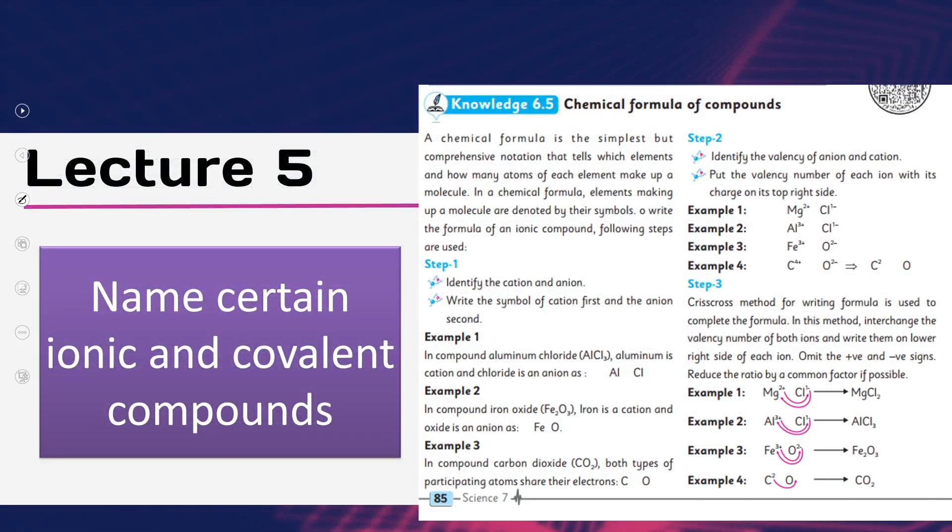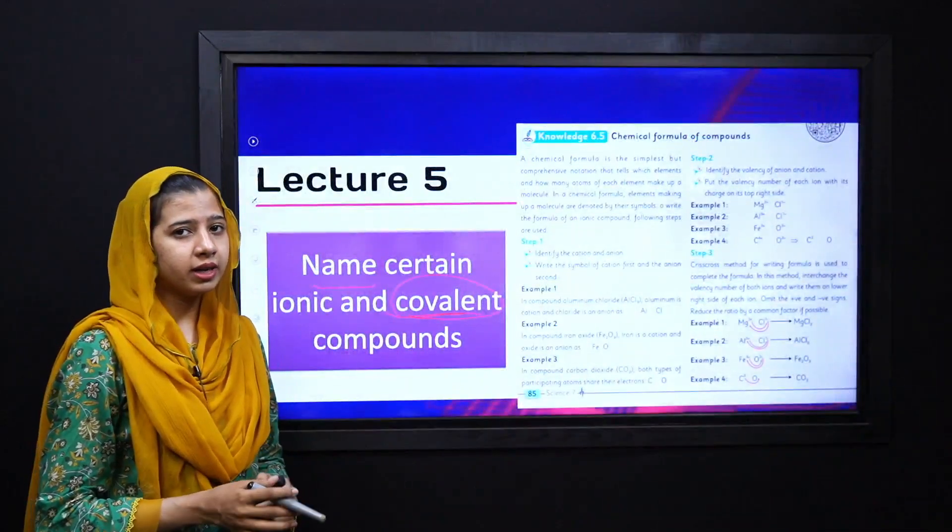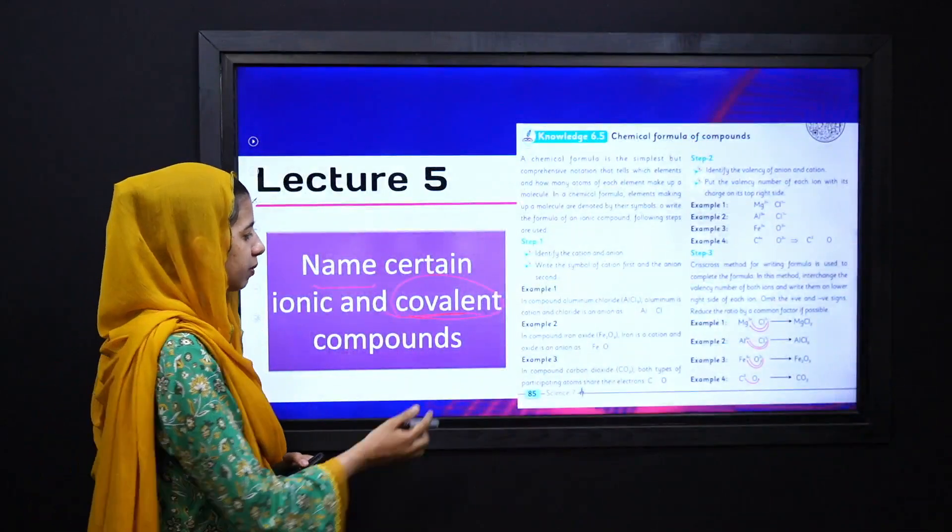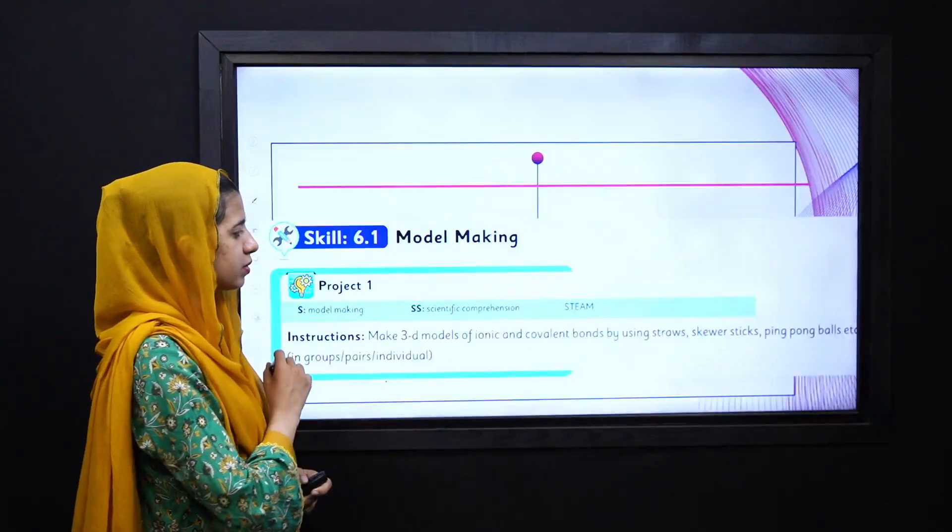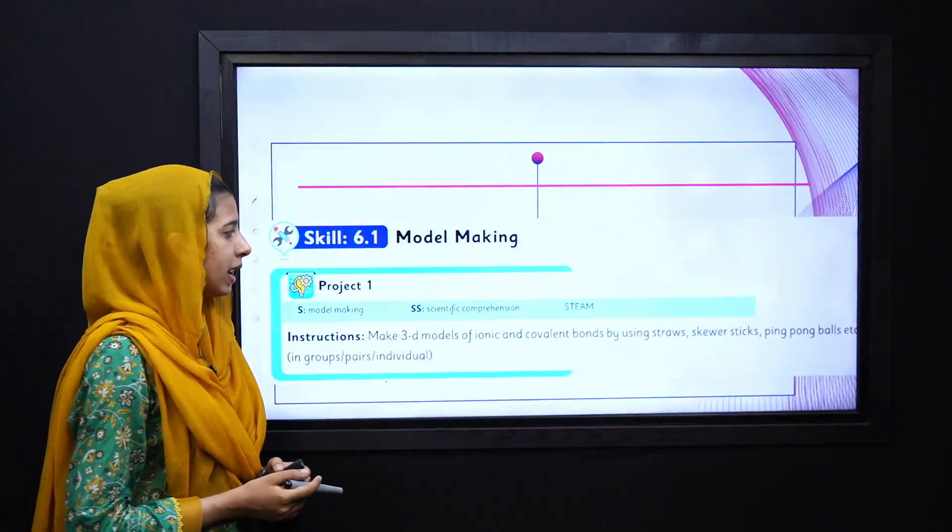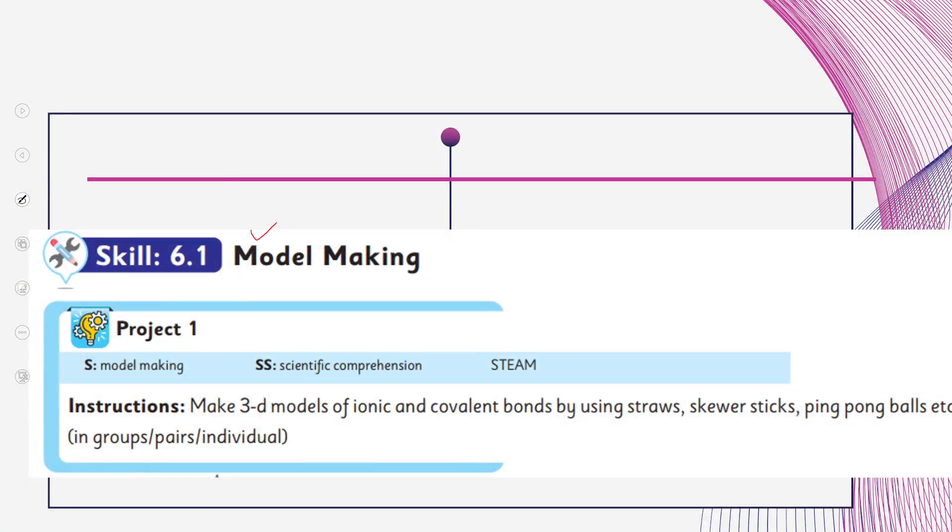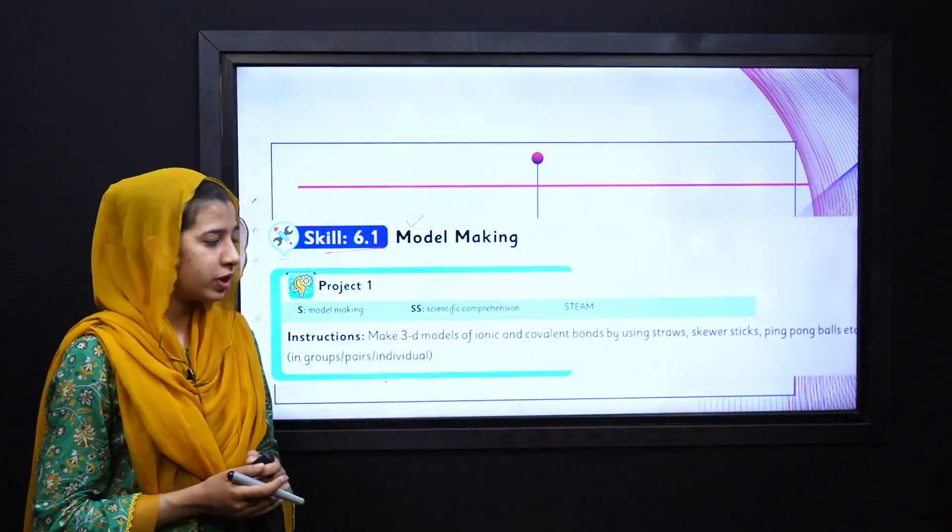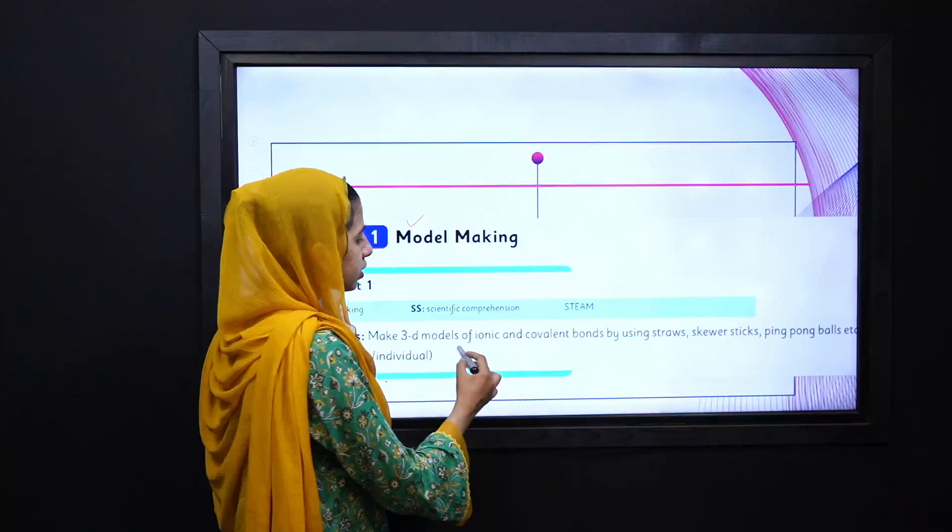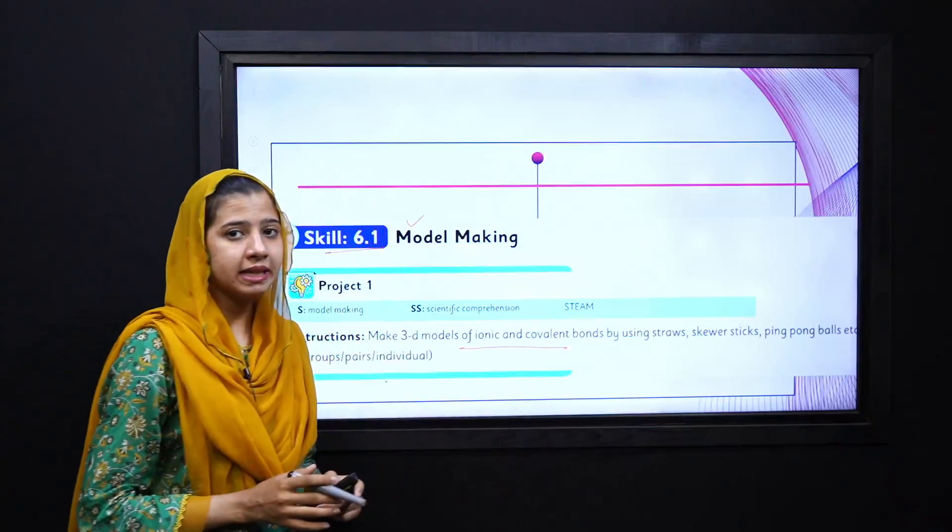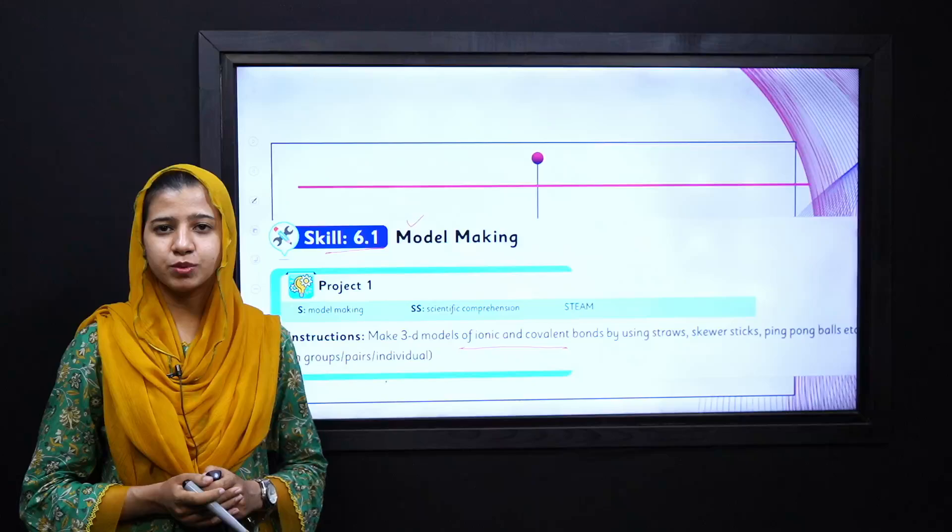In lecture 5, we will name certain covalent compounds. We will learn how to write chemical formulas for covalent compounds, and we will discuss a few examples. We will apply this knowledge to do model making in Skill 6.1, in which we will prepare models of ionic and covalent compounds. Through preparing these models, you will easily learn the concepts of covalent and ionic compounds.